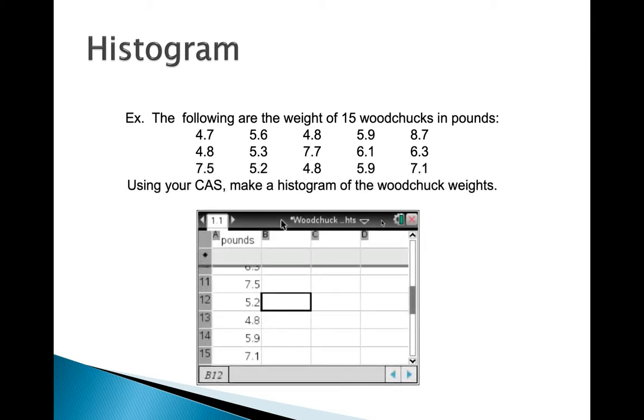So first thing I'm going to do is open a document. I went ahead and titled it just to make sure I can save it. And I labeled my list as pounds. Remember, this is a list and spreadsheet page. So I just came up here and typed pounds. And then I just entered my data below. Remember, we don't use the gray cell. You label up here at A and then you start entering the data.